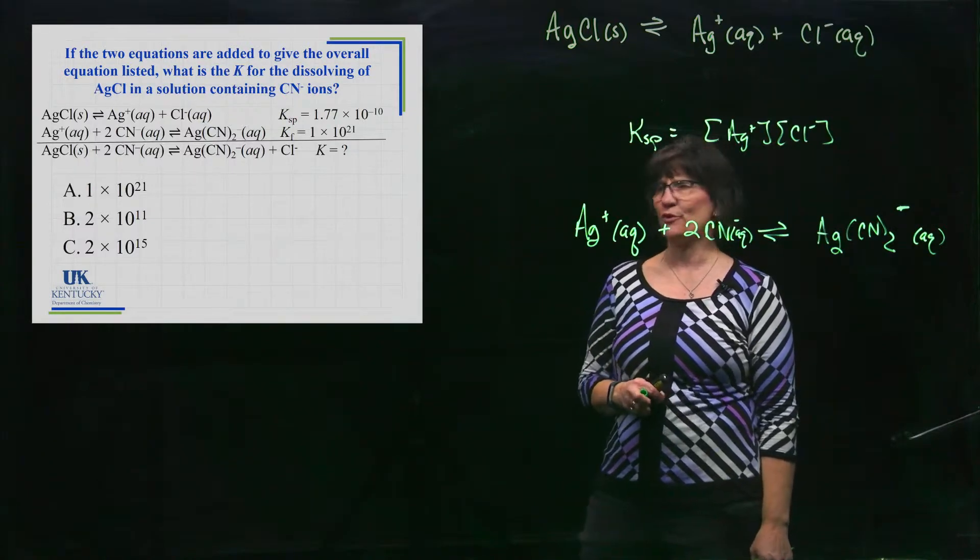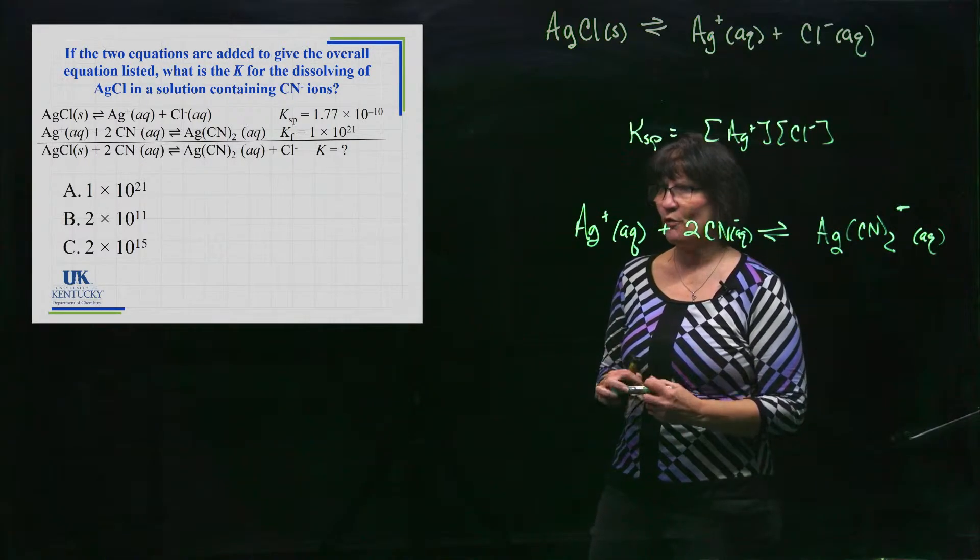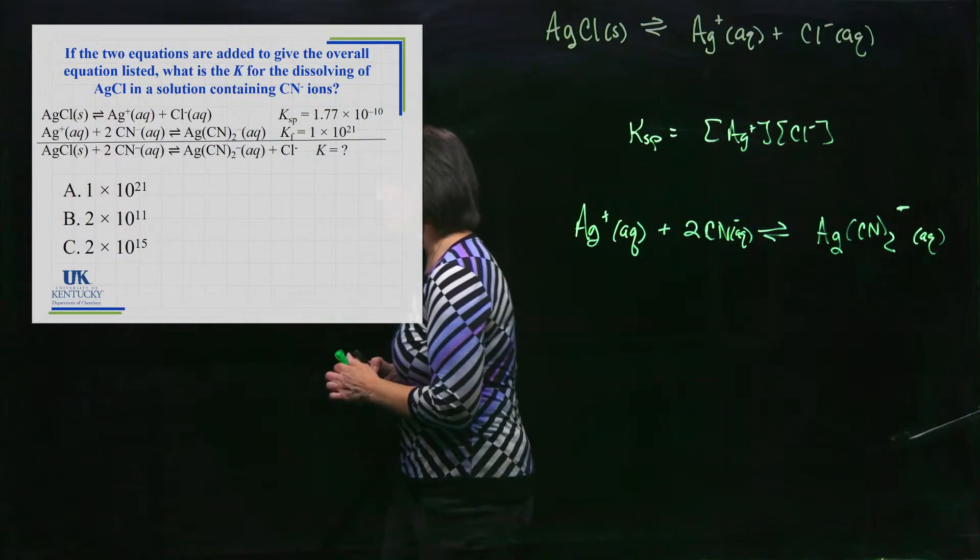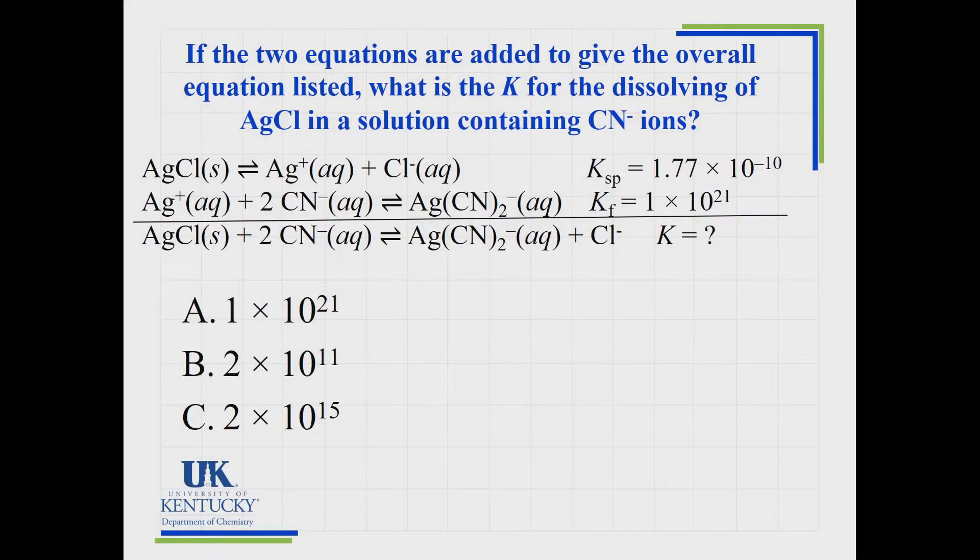So here's the two reactions with their numbers. And let me go over to the board and talk about it a little bit. I told you that this one lies far to the left because of that very small K. This one lies far to the right because of its very large K.